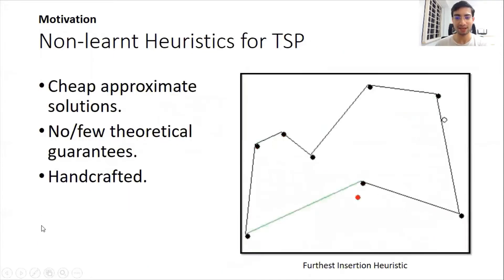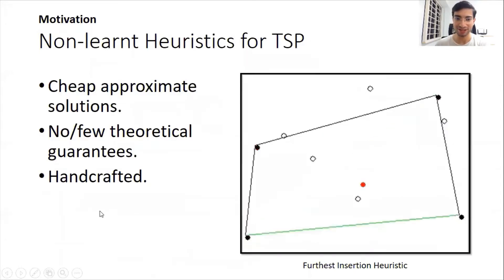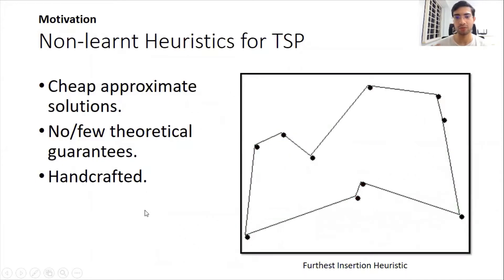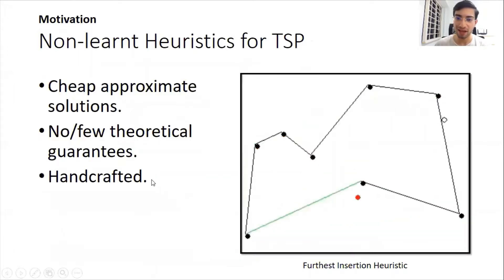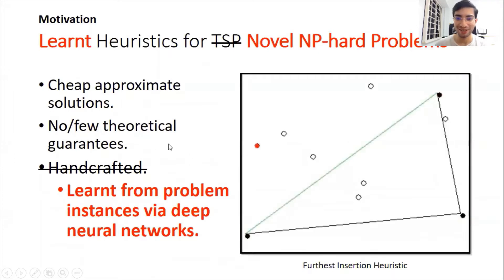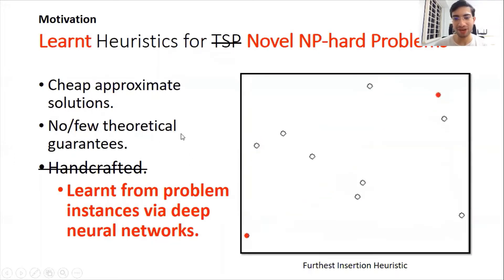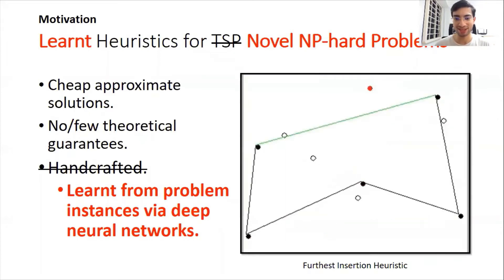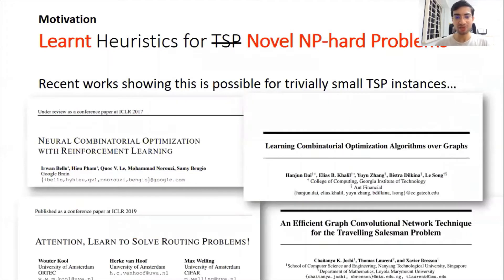What motivates neural combinatorial optimization is the idea of non-learned cheap approximate solutions, or heuristics, without much theoretical guarantees — they're hand-engineered and handcrafted, but super fast. With deep learning, we don't like handcrafting. Learned heuristics for TSP and generally for any combinatorial problem will try to go beyond human intuition by studying problem instances and constructing heuristics based on data.